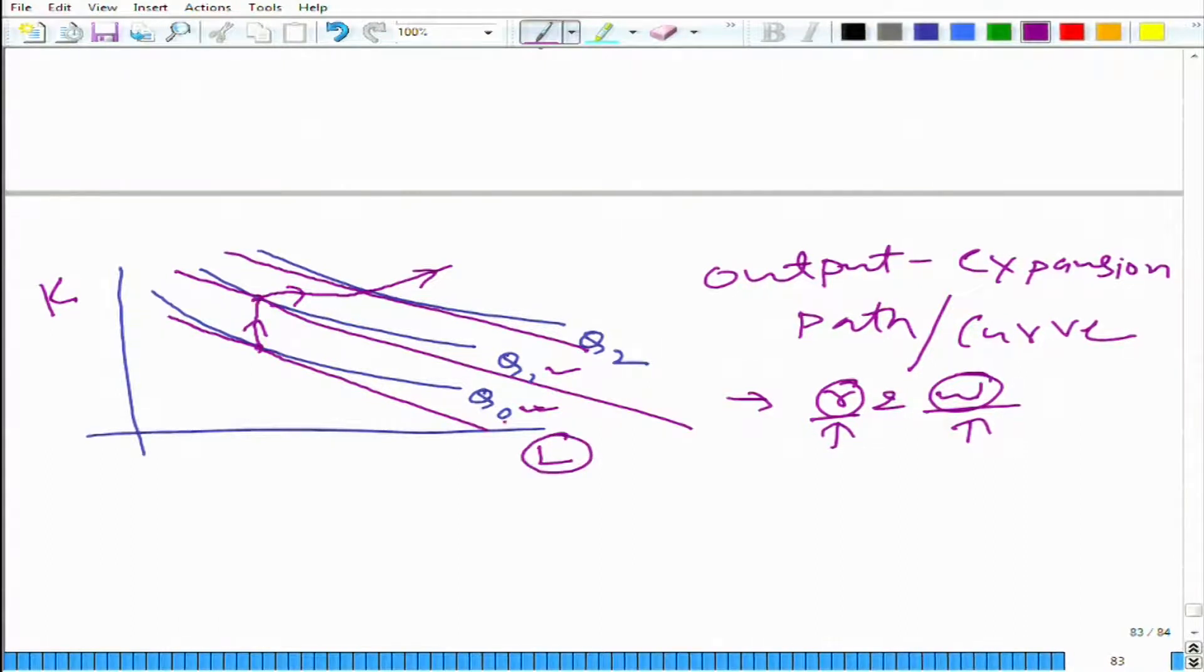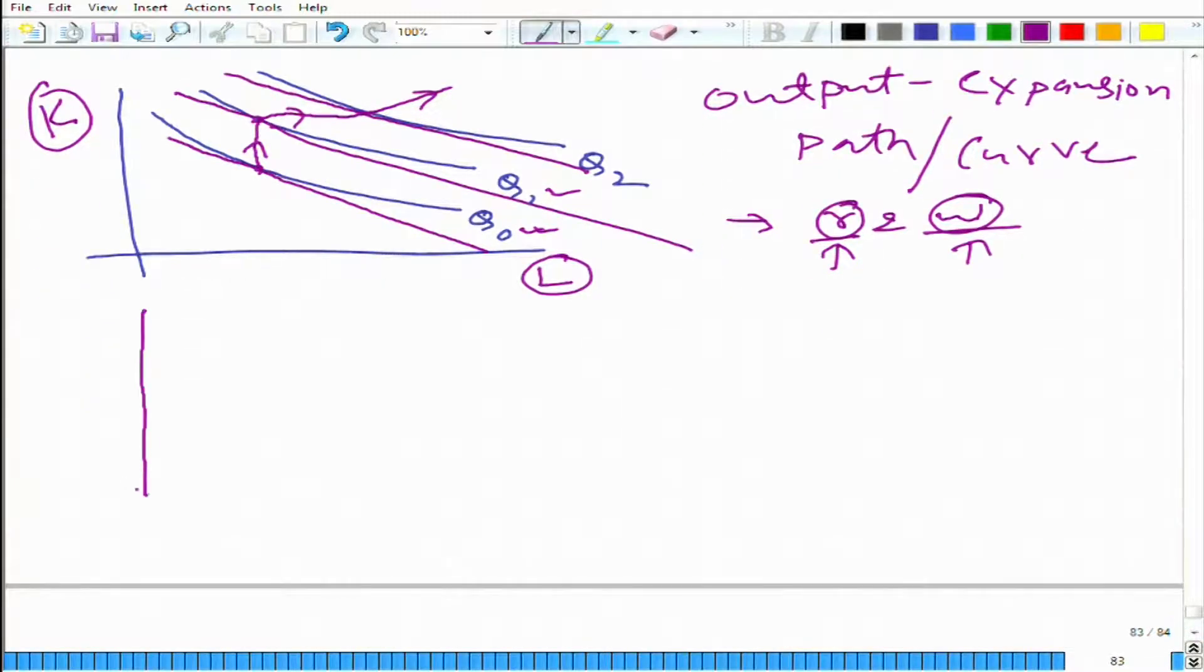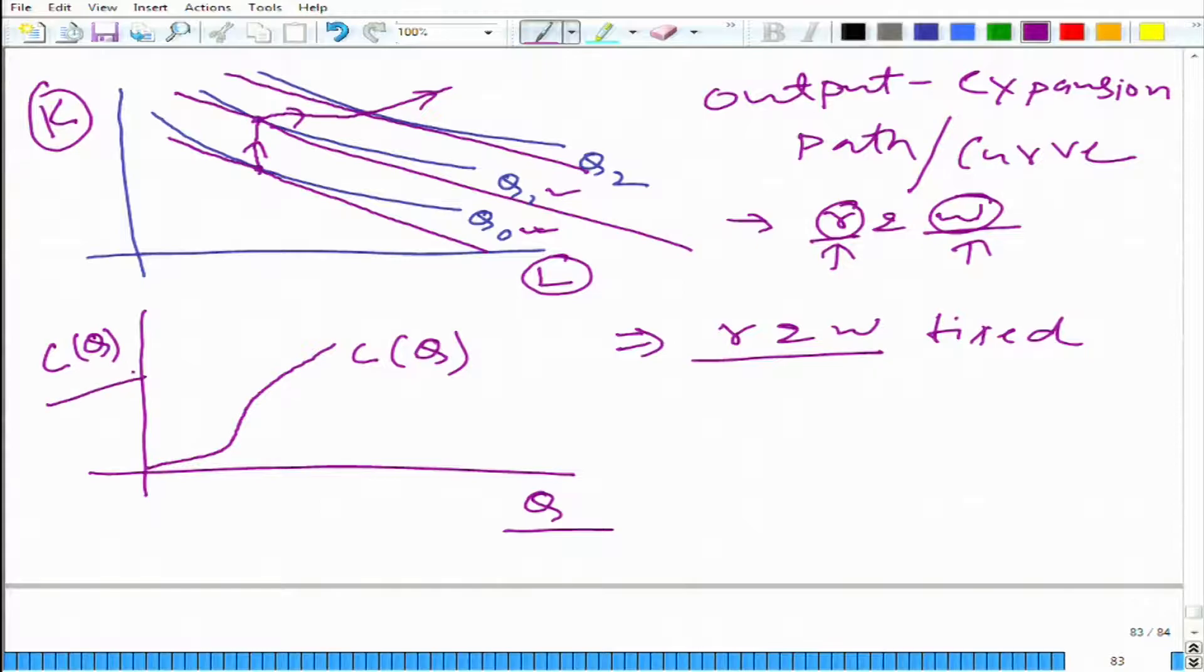Remember, this output expansion path that we are getting is on the graph of K-L, or L-K to be precise. What we can do is take these optimal paths and draw them here: here we have output and here we have total cost C(q). This is what we get - C(q) - again here taking r and w fixed. We are varying q and seeing its impact on total cost.